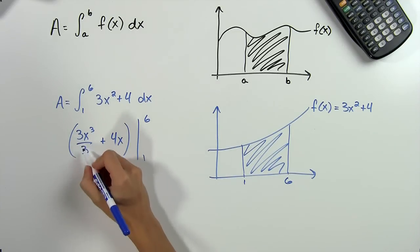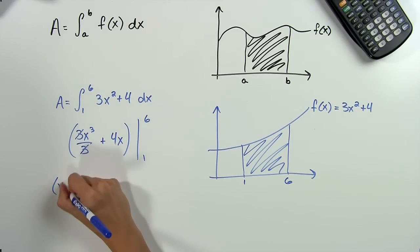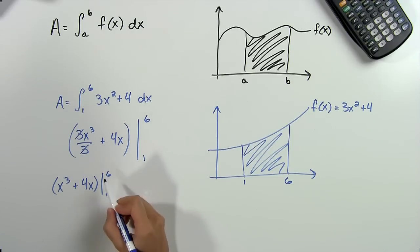Now of course these two 3's can cancel out, so we're actually just evaluating x cubed plus 4x from 1 to 6. First we plug in the 6, so we get 6 cubed plus 4 times 6,